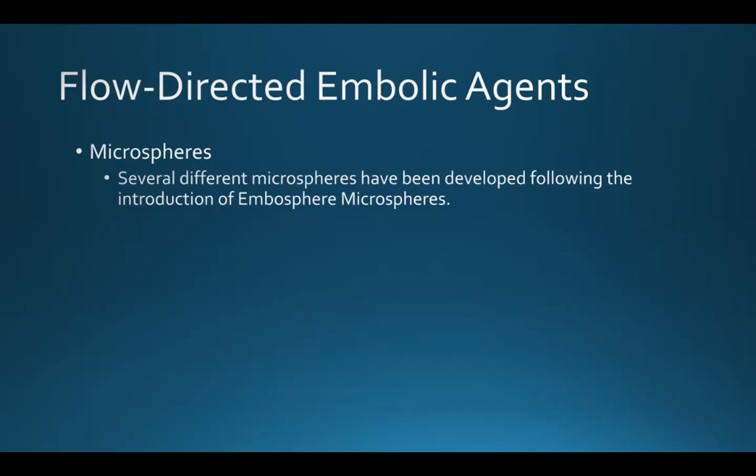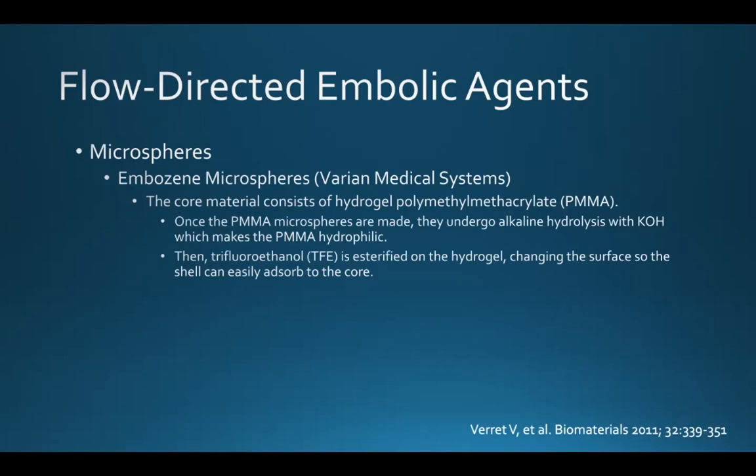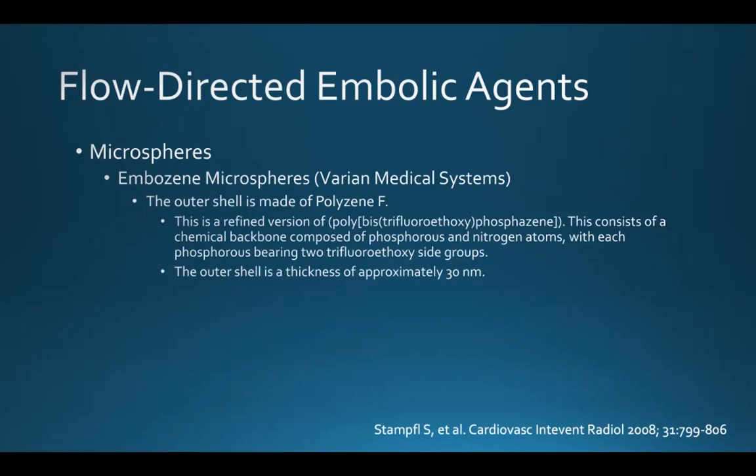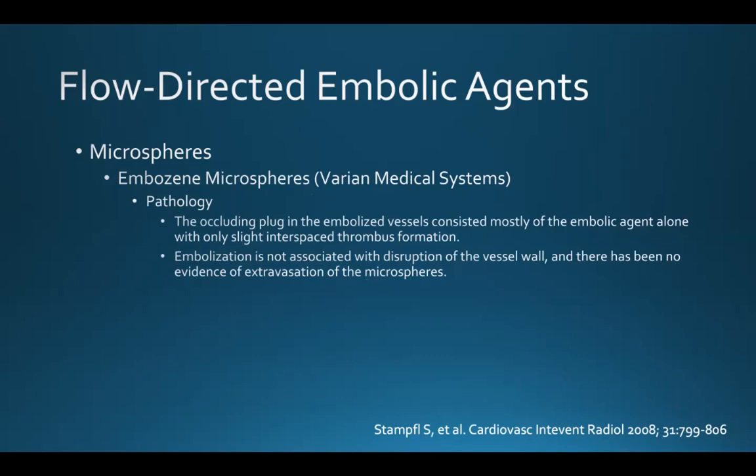Following the introduction of embosphere microspheres, several other microspheres have been developed and are commercially available. Embosene microspheres are another available embolic microsphere. The core material is a hydrogel consisting of polymethylmethacrylate, known as PMMA. Once the PMMA microspheres are made, they undergo hydrolysis, which makes them hydrophilic. That process allows a shell to be added to the hydrogel core — this shell is made of polysene F, approximately 30 nanometers thick, and is a proprietary material made mostly of phosphorus and nitrogen atoms. When embosene is used, the occluding plug consists mostly of the embolic agent alone, with only a small degree of thrombosis, similar to embospheres.